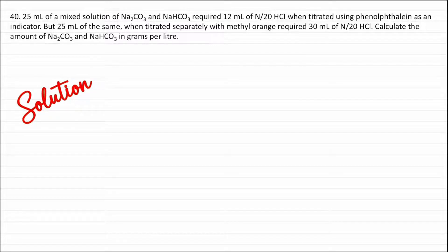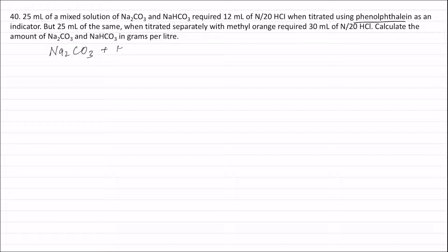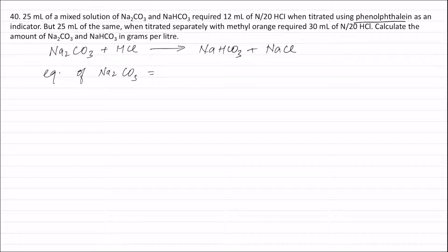When the titration is done using phenolphthalein as indicator, the reaction will be: Na₂CO₃ + HCl forming NaHCO₃ + NaCl. The equivalence of sodium carbonate that reacted with HCl will be equal to the equivalence of HCl. Therefore, equivalence of HCl = normality of HCl (1/20) × volume of HCl in liters (12/1000) = 0.0006 equivalence.